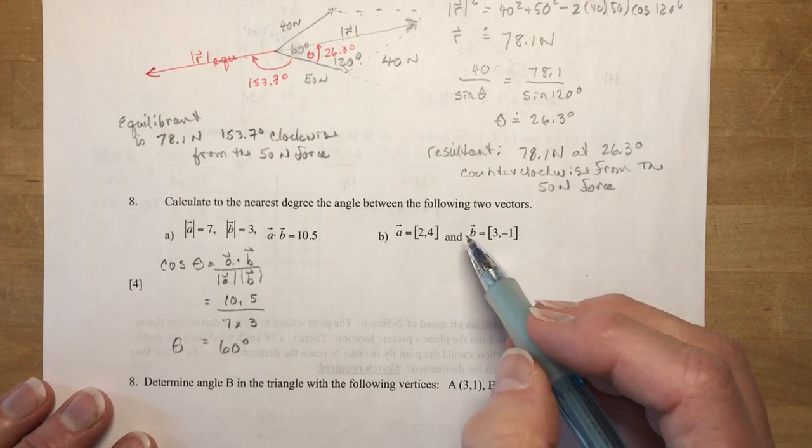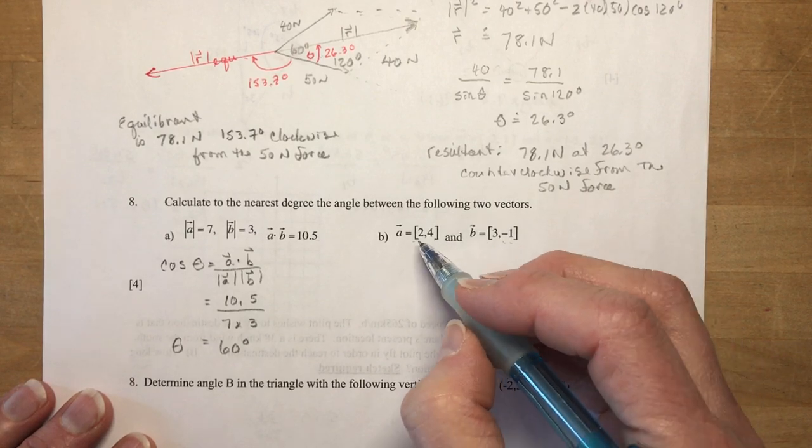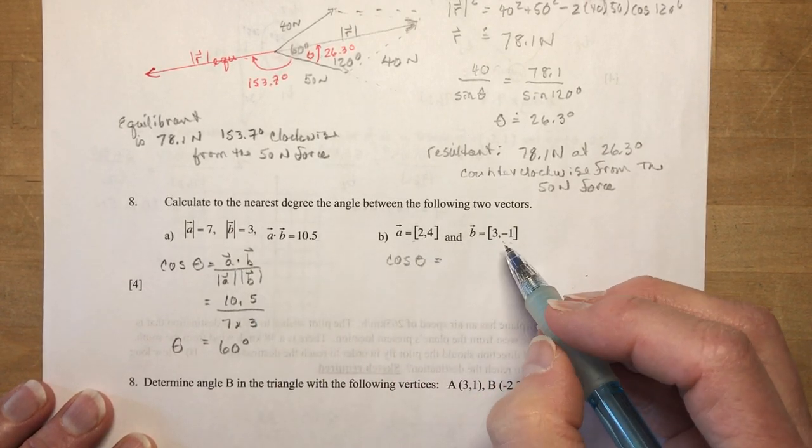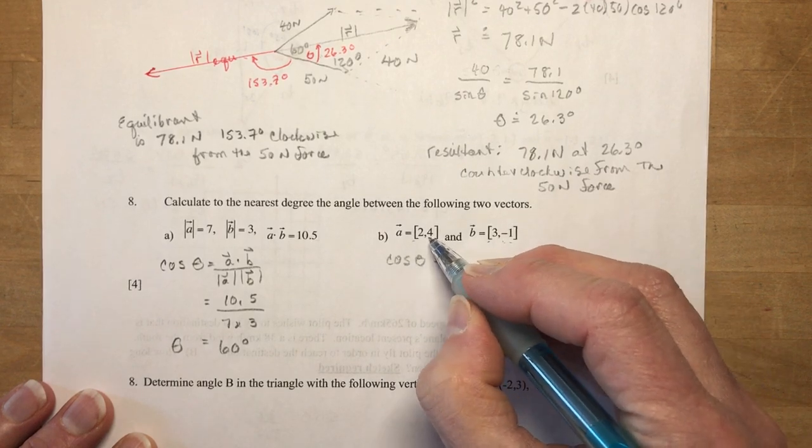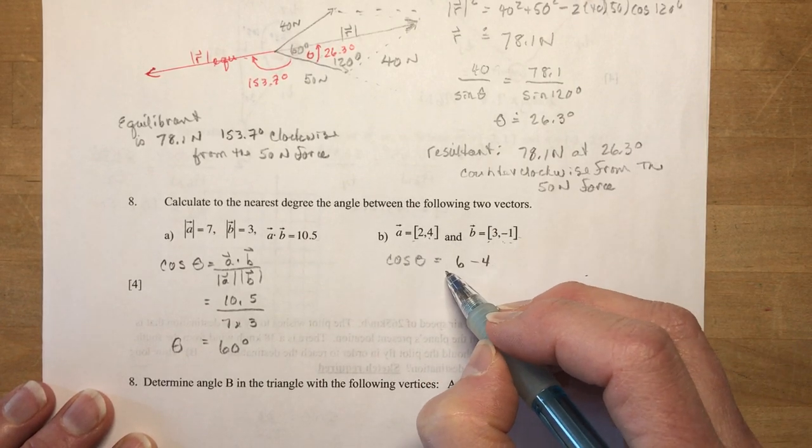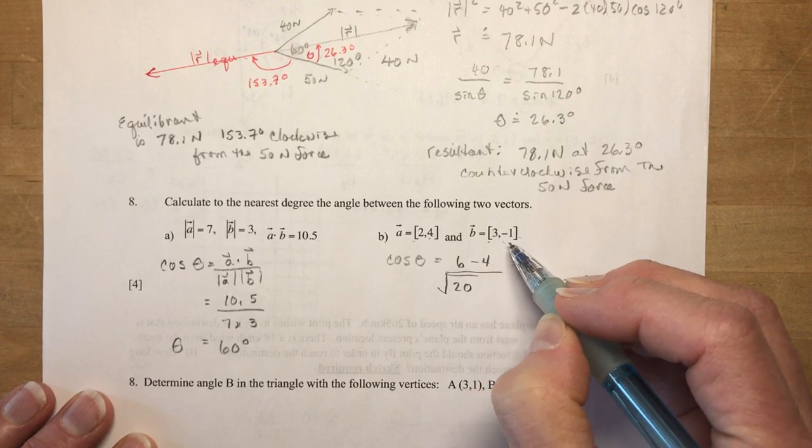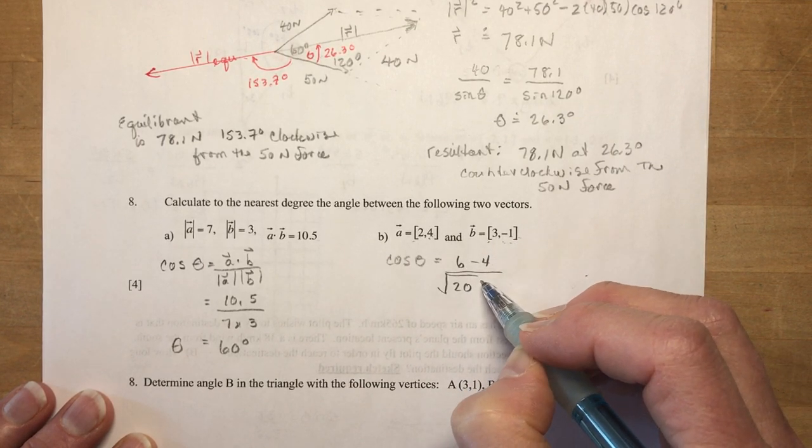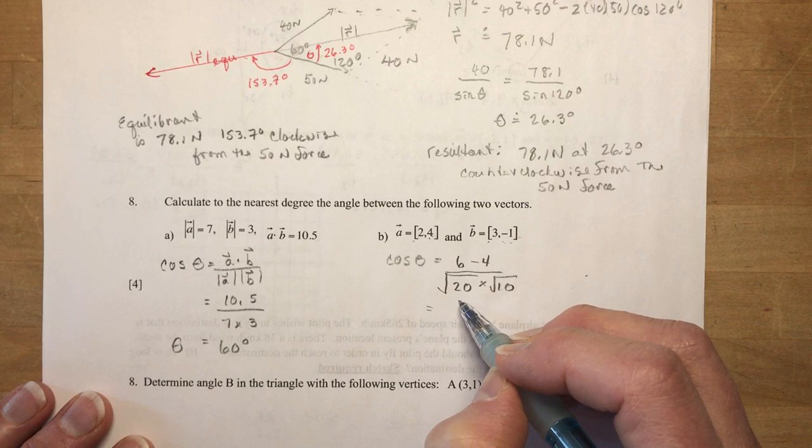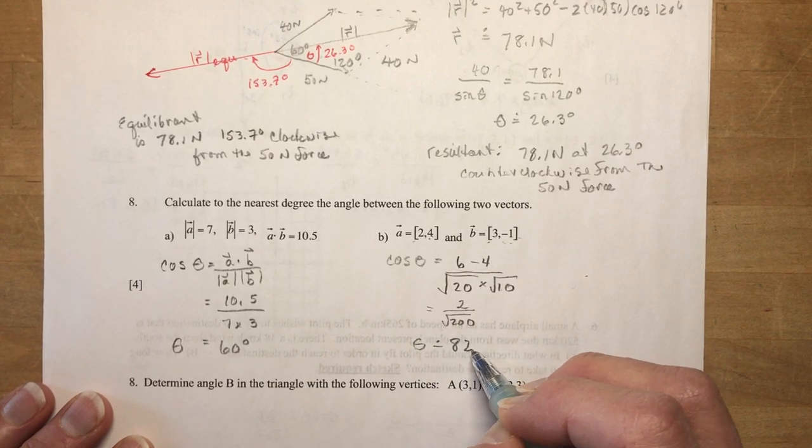Now this one I gave you the algebraic vectors. So you have 2, 4 and 3, minus 1. So for this one I'm going to find the dot product. So same formula. I'm not going to write it out again, but let's do the dot product. So that's 6 and minus 4. So you multiply the x's together and you add the product of the y's which is negative here over the magnitude of the two vectors. Magnitude of this is 2 squared plus 4 squared. That's square root 20. And 9 plus 1 is 10. That gives me 2 over the square root of 200. 2 over the square root of 200. And theta comes up to approximately 82 degrees.